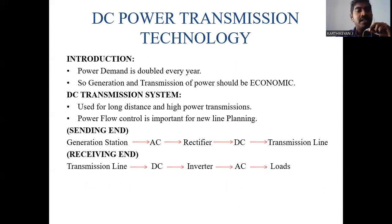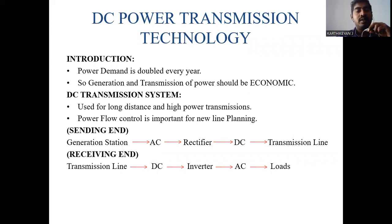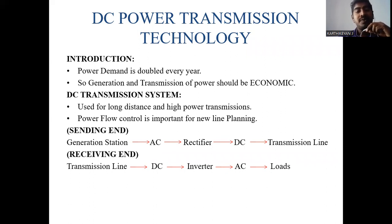In this era, demand is doubling every year, so we need to expand generation as well as transmission to meet our requirements in an economical manner. Compared to the AC transmission system, the DC transmission system is more economical because it can be used for long distance and high power transmission, and power flow control is more precise.